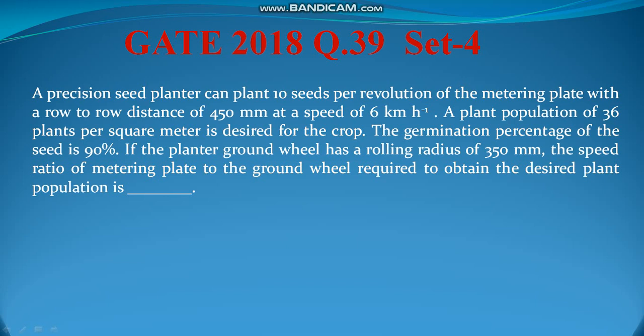A plant population of 36 plants per square meter is desired for the crop. The germination percentage of the seed is 90%. The planter's ground wheel has a rolling radius of 350 mm. We need to find the speed ratio of the metering plate to the ground wheel required to obtain the desired plant population.